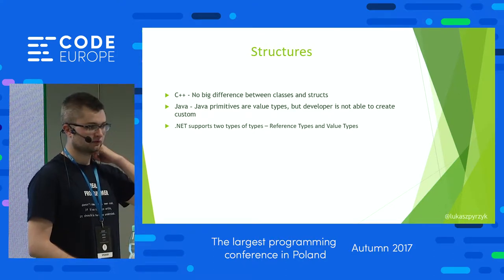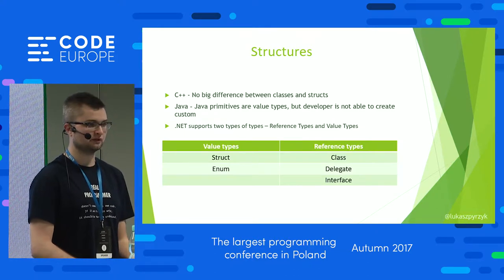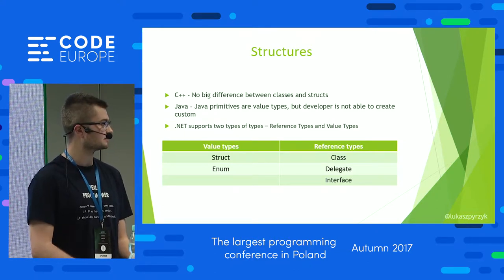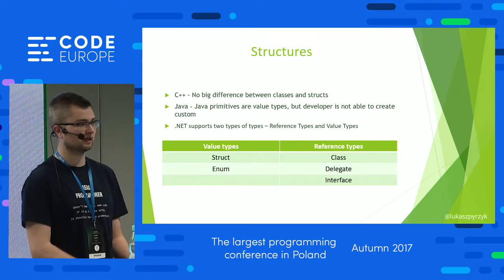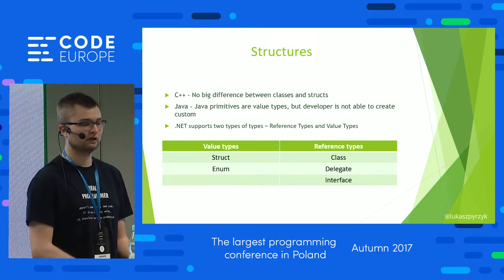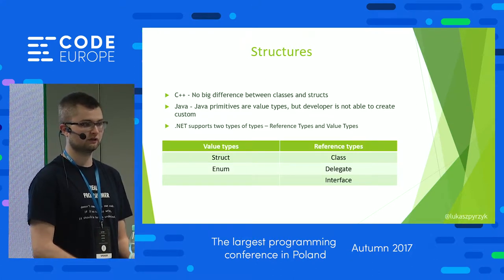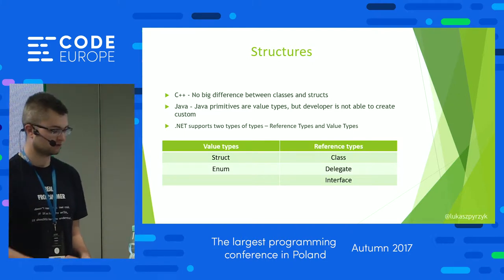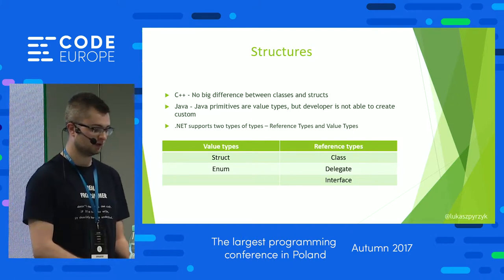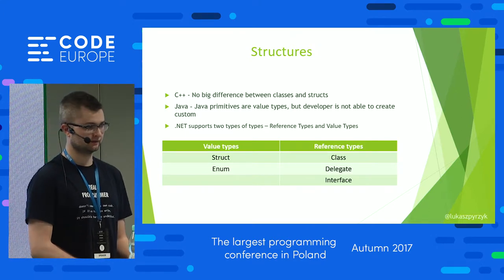When it comes to .NET, it supports more value types than you might expect, because a value type is also an enum — and I guess that's one point for an interview question. When it comes to reference types, which are also popular in .NET, we also have delegates and interfaces. And there is one more special type which is neither a value type nor a reference type, and that is an unmanaged pointer.